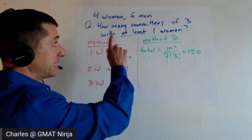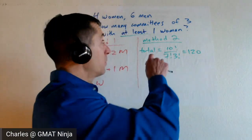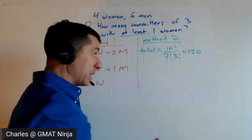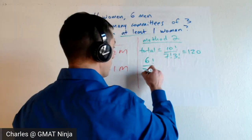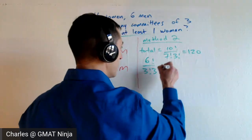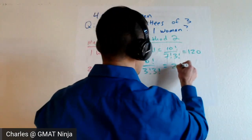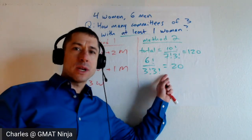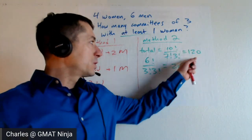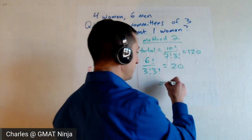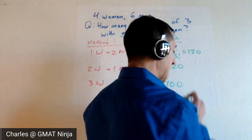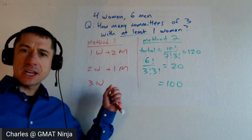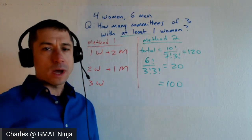So what does that mean? Committees of three with no women — we're just choosing three out of those six men. That's all we're doing. So six factorial over three factorial times three factorial, that just gives us 20. This is the number of ways to choose a committee of three with no women. 120 minus 20 — the answer is 100. Nice and quick, not a lot of arithmetic, and you're out of here much more quickly than if you do method number one.